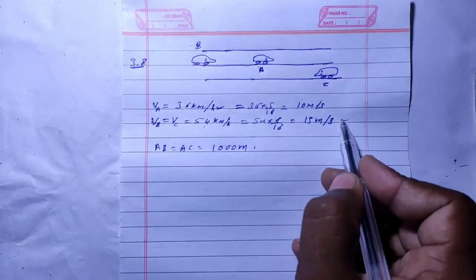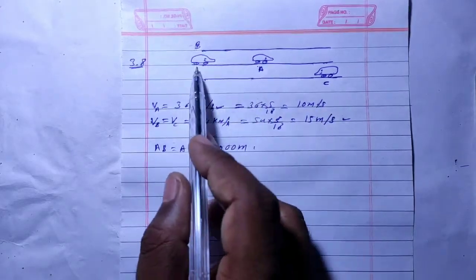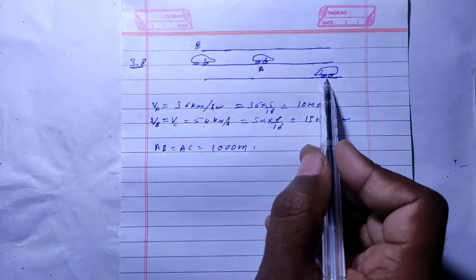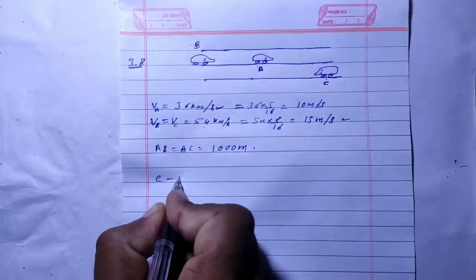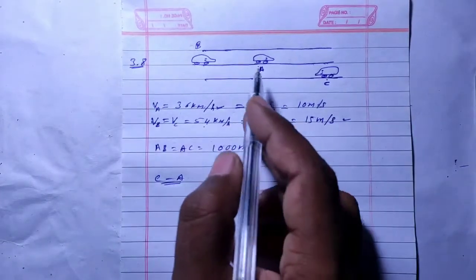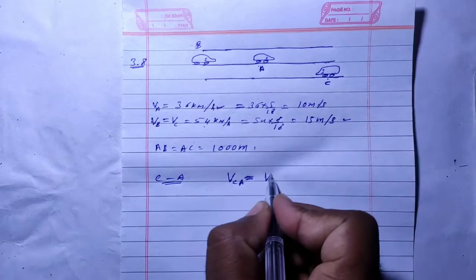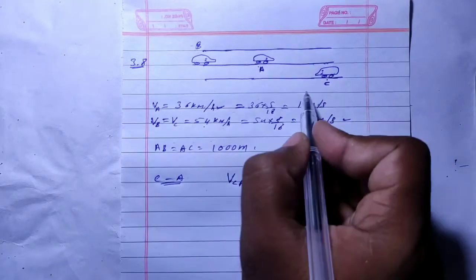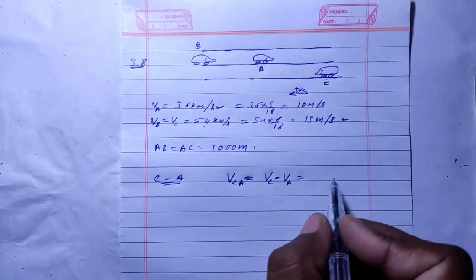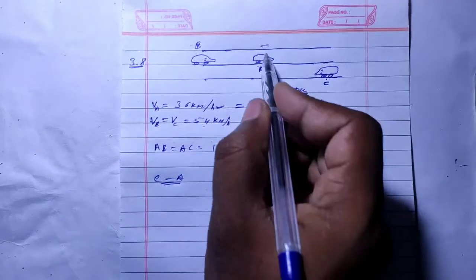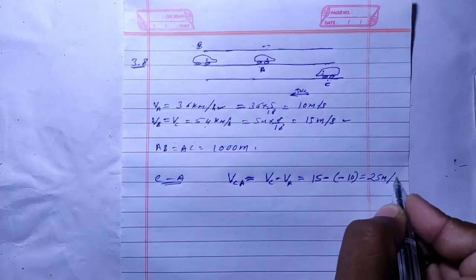Now, speed of B is 15 meters per second. If C is going to cross A, we need to see when C will reach A. To make calculation easier, we can consider A at rest. The velocity of C with respect to A is VC minus VA. If we take this direction as positive, velocity of C is positive 15 meters per second, and velocity of A is negative 10 since it's moving in the opposite direction. So VC minus VA equals 15 minus negative 10, which is 25 meters per second, the velocity of C with respect to A.